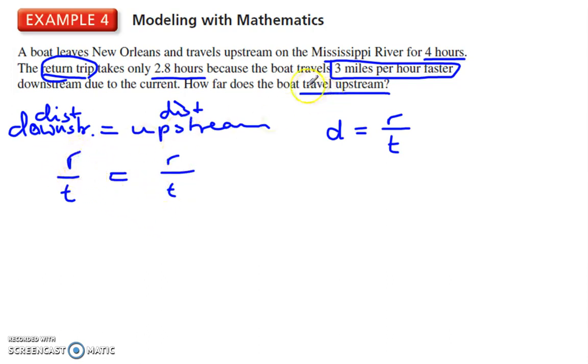So distance, I'm going to replace that with rate times time. So rate times time going upstream should be equal to rate times time going downstream because it's the same distance. Now our rate here will be multiplied by 4 because we traveled upstream for 4 hours. This is miles per hour, so we do this times 2.8 on this side. Now, our rate here was 3 miles faster than the rate going up, so we have to take that rate plus 3 because it's that much per hour, 3 miles per hour faster. So now we can solve this. This is per 1 hour, so this is x over 1 hour times 4 is equal to x plus 3 over 1 hour times 2.8.